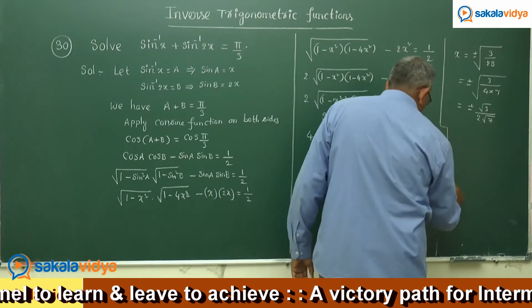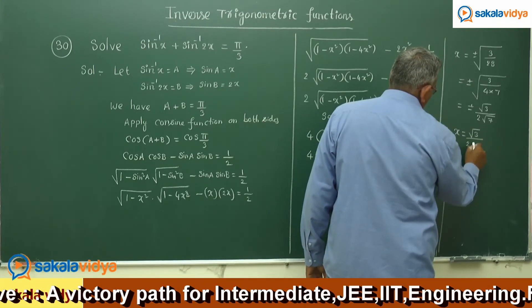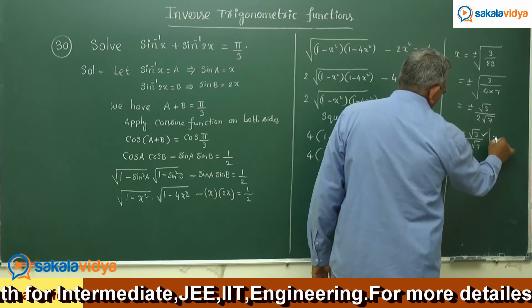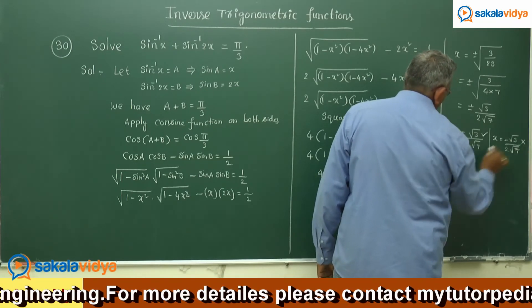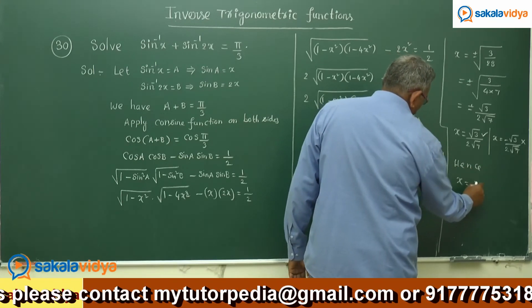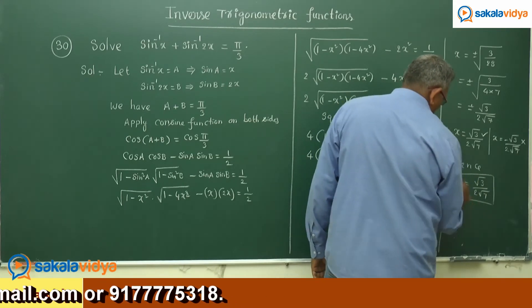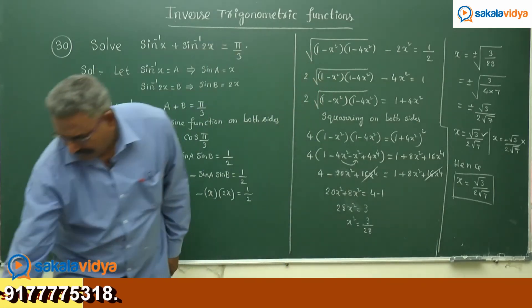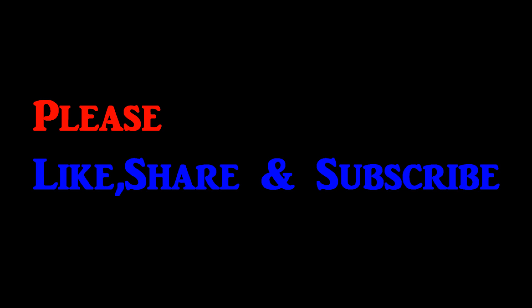The solution is x equals √3/(2√7). The negative value, −√3/(2√7), is not a solution. Hence, x equals √3/(2√7) is the solution.